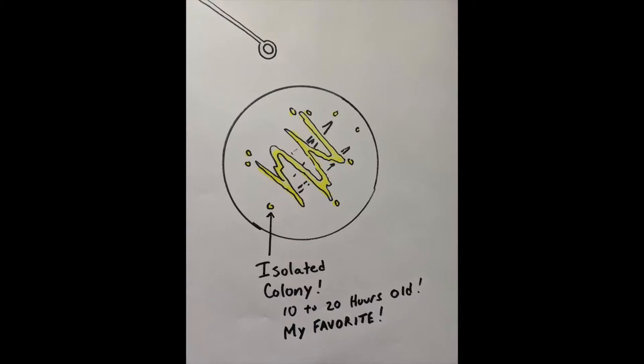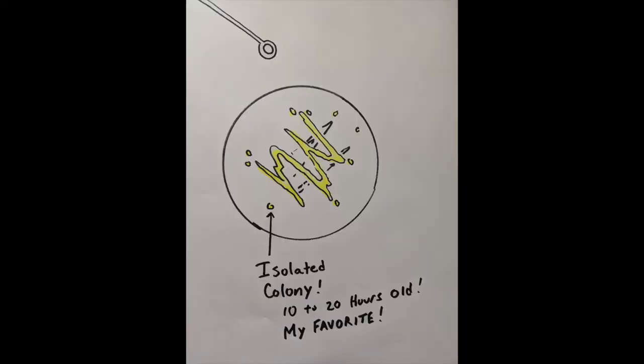Ten to twenty hours before the lab, I've done what's called a streak plate — ideally 18 to 20 hours. After 24 hours the bacteria get a little sleepy and are less likely to take up the DNA. The evening before the lab, I'll take the harmless E. coli strain, put it on a sterile inoculating loop, do a streak plate across the plate in two directions, cap it, and incubate it overnight. What happens is you get small isolated colonies on the fringes, called isolates — those are the bacteria we want to collect for our experiment.